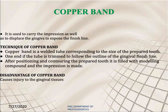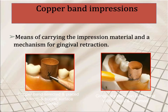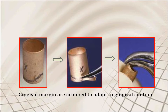The copper band is used as a mechanical method of gingival retraction, both to carry the impression material and to displace the gingiva to expose the finish line. The copper band is a welded tube corresponding to the size of the prepared tooth. One end is trimmed to follow the outline of the gingival finish line. After positioning and contouring on the prepared tooth, it is filled with modeling compound and the impression is made. A disadvantage is that it causes injury to the gingival tissues.